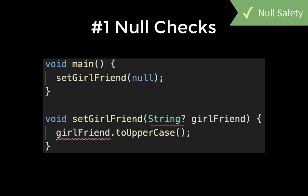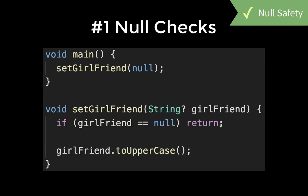With this, we can pass a null to this method or also a real value. The compiler is now warning us that we cannot call the toUpperCase method because the nullable string value can also have a null value, and therefore we need to make sure that we catch this null value. With this, the compiler error will disappear.